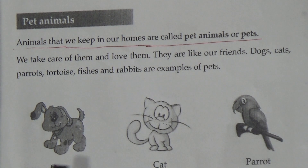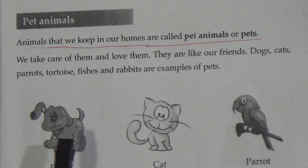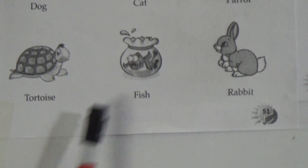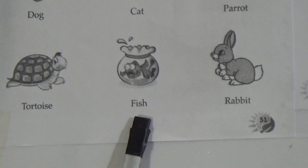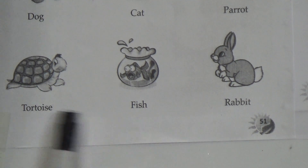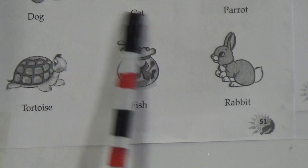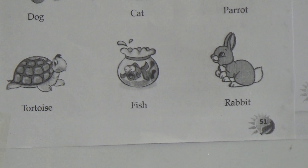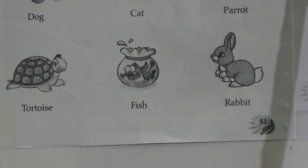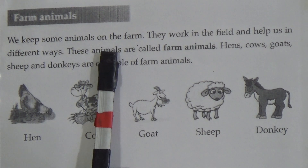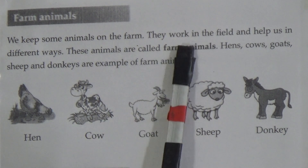Dogs, cats, parrots, turtles, fishes and rabbits are examples of pets. My dear students, see this figure — this is a dog, this one is a cat, this one is a parrot, this one is a turtle, this one is a fish, and this is a rabbit. All of these animals are examples of pet animals.